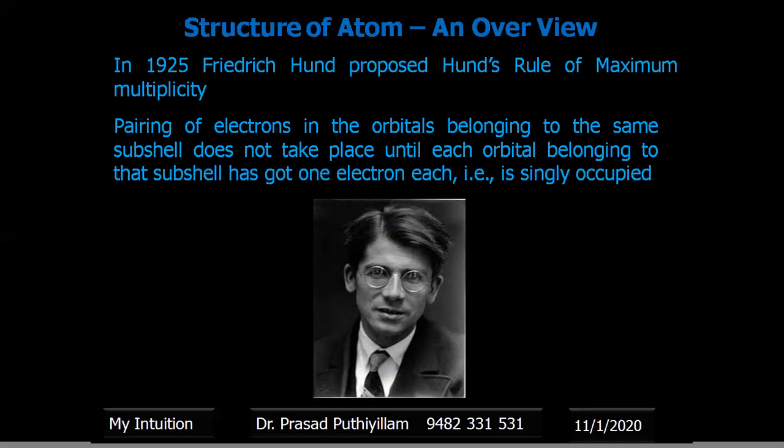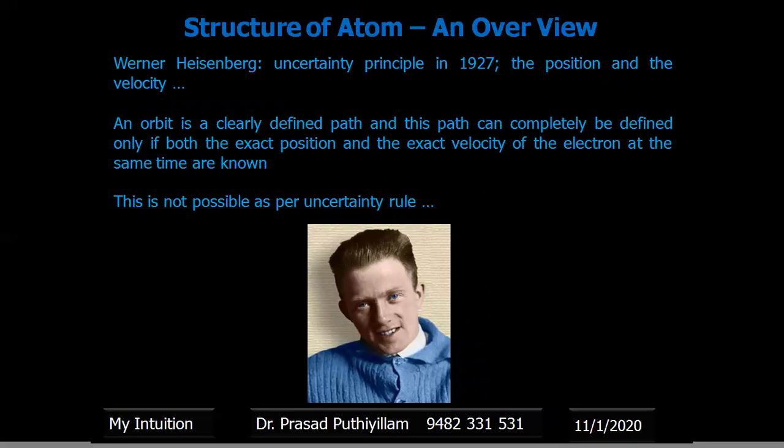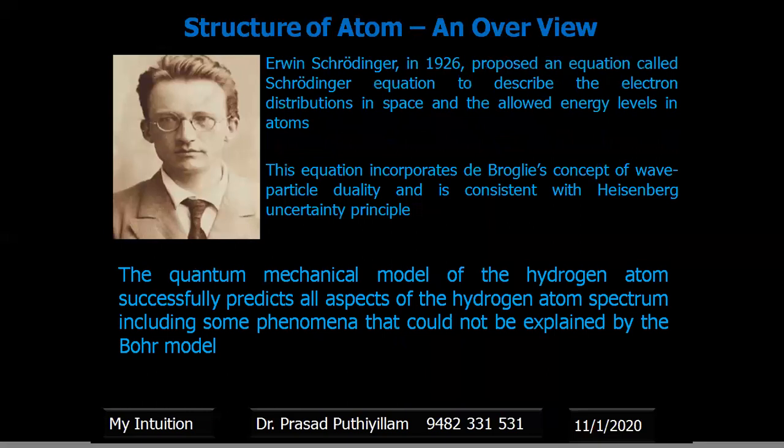Werner Heisenberg, with the famous uncertainty principle in 1927, concluded that it is impossible to precisely identify both the position and velocity of a particle at the same time. Therefore, the concept of a defined orbit — which implies a known position and velocity simultaneously — is not possible as per the uncertainty principle.